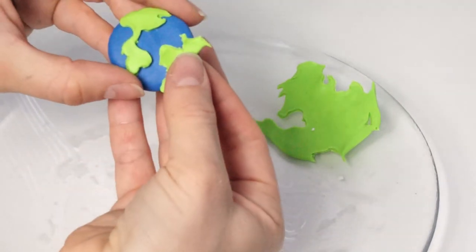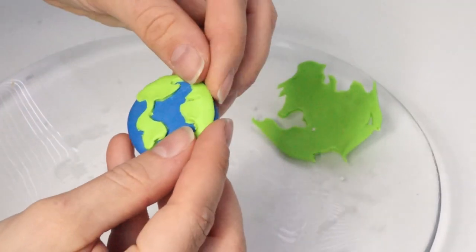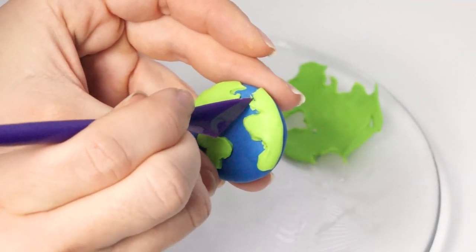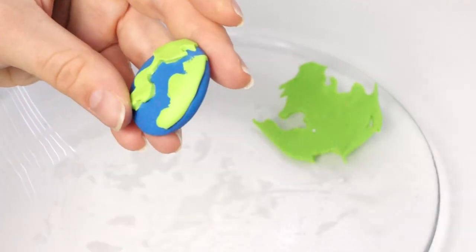You can do whatever continents you like. After you've carved out using your sharp tool and put them in place, clean up the green outlines so that they look as neat as possible on top of the blue.